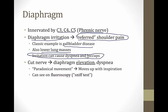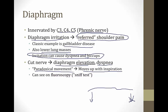Damage to the phrenic nerve causes the diaphragm to elevate on the affected side, leading to dyspnea. Patients who have thoracic or cardiac surgery often have phrenic nerve damage. They develop paradoxical movement — the affected side moves up during inspiration while the normal side moves down. This can be visualized under fluoroscopy with a sniff test to diagnose phrenic nerve damage.